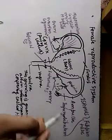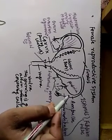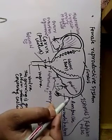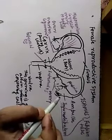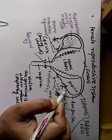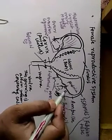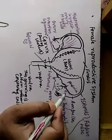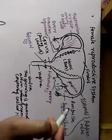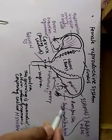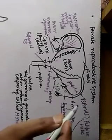After the infundibulum, the second part is the ampulla. The ampulla is a slightly swollen space in the fallopian tube. When the ovum is produced, it is pushed forward by the ciliary epithelium — the cilia push the ovum toward the ampulla region. In the ampulla region, fertilization takes place.